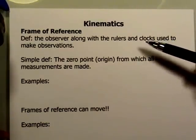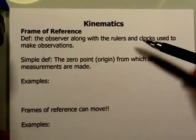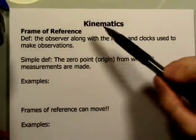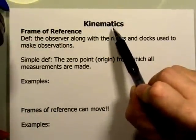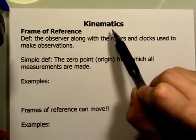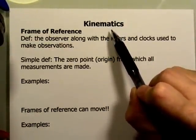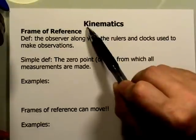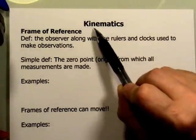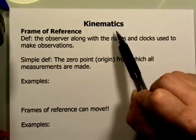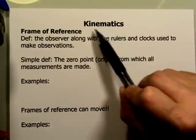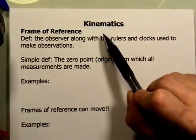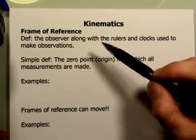Today we'll begin our study of kinematics. Kinematics is basically the study of motion, and the root word 'kinemat' actually means movement — it's of Greek origin. That's also the origin of the word cinema, since if you replace the K you can see the word cinema in there, which is obviously motion pictures. So anything starting K-I-N-E generally refers to movement of some type.